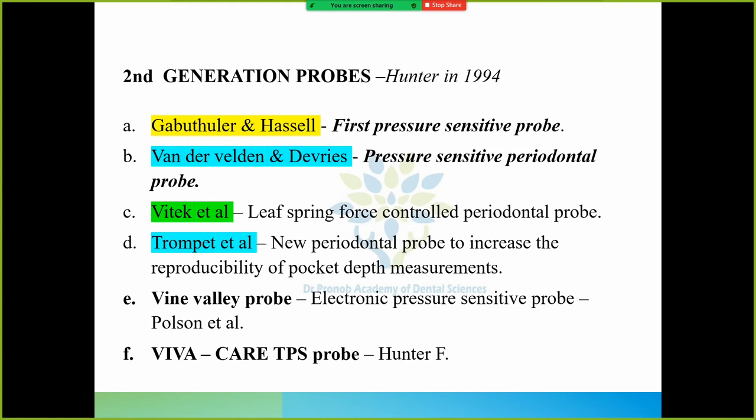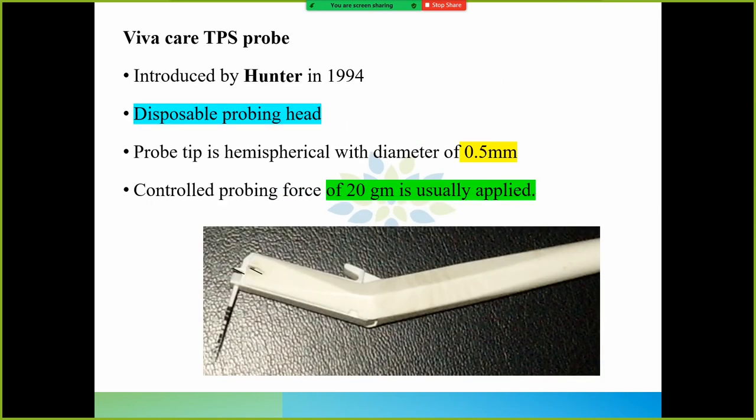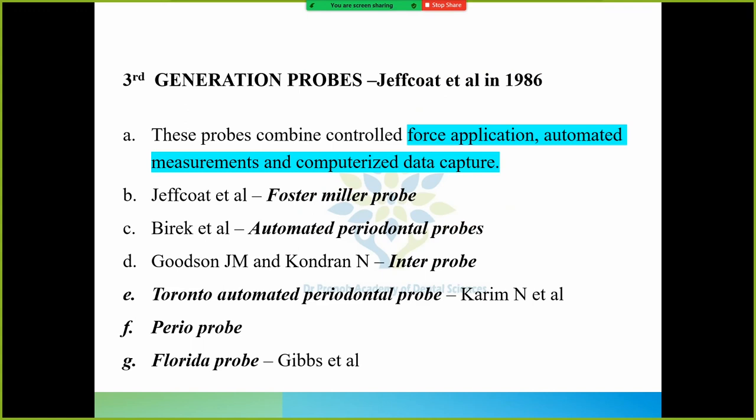Second and third generation probes: Second generation probes - you just have to remember the names. Which scientist gave it and what's the name. This is known as FOSP pressure-sensitive probe, then pressure-sensitive periodontal probe, lift spring force control periodontal probe. These are not very important, but you have to remember Vine Valley probe - electronic pressure-sensitive probe. Vine Valley probe is electronic pressure-sensitive probe. And Viva Care TPS probe was given by Hunter F. We'll talk a bit about this.